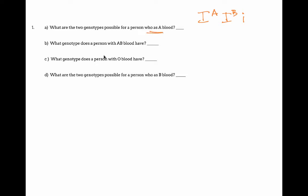So if you are type A, you could either be I^A I^A or I^A i. So you would have to know which genotype that person was.